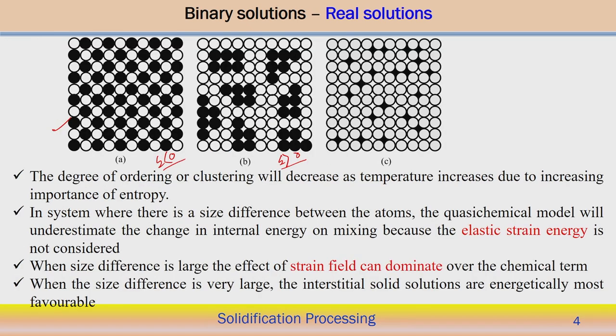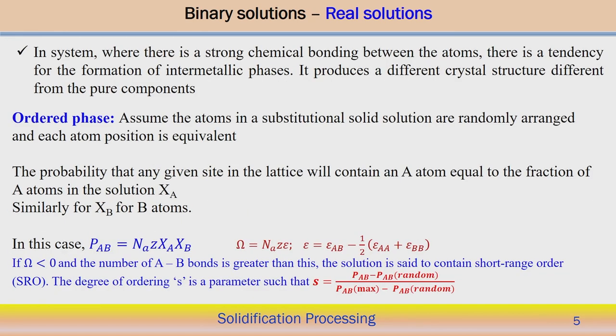Just to understand the different aspects of the real solution and how it deviates from the ideal or regular solution — now in one particular system, when there is a strong chemical bonding between the atoms, there is definitely a tendency for the formation of intermetallic phases. This produces a completely different crystal structure from the pure components A and B. We will start to understand how intermetallic phases actually form and how it is related to the Gibbs free energy change.